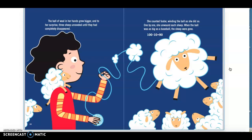One by one, she unwound each sheep. When the ball was as big as a baseball, the sheep were gone. One hundred minus ten equals ninety.